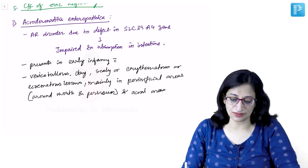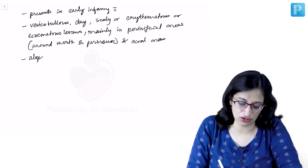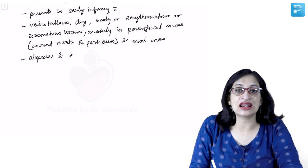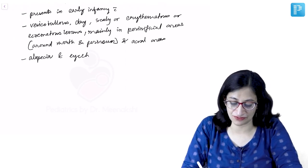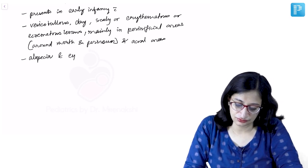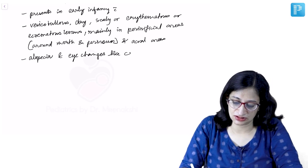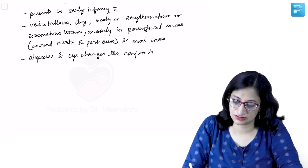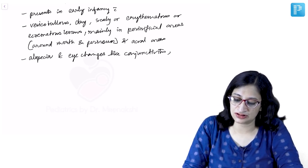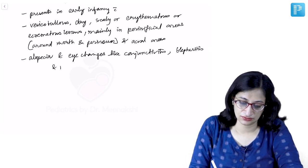Apart from that, alopecia and some eye changes can also be seen. There can be alopecia or deficient hair or red colored hair may also be there. And eye changes like conjunctivitis, blepharitis, which leads to photophobia.